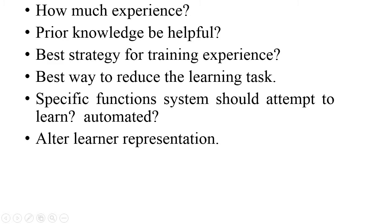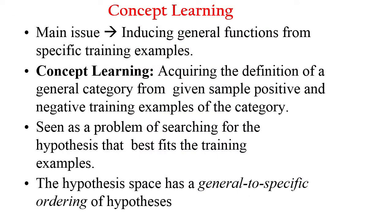How can the learner automatically alter its representation to improve its ability to represent and learn the target function? For these questions, there is no specific or exact answer available in machine learning — that's why these questions become the issues in machine learning. For every training example there may be a specific function; finding a general function applicable to all training examples is the main issue. This brings us to concept learning.